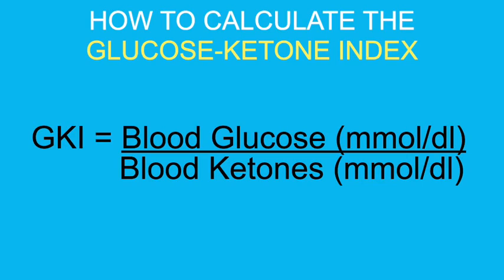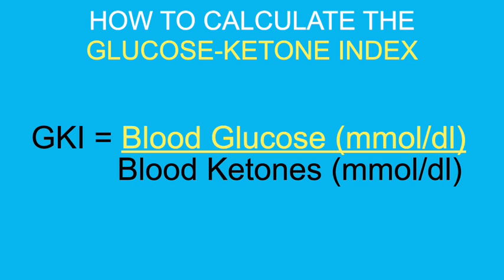What these two researchers looked at was not just tracking blood glucose levels, but also looking at blood ketone levels and using a ratio of the two to get a sense of how deep into ketosis their patients were. Essentially, it's just blood glucose levels divided by your ketone levels.